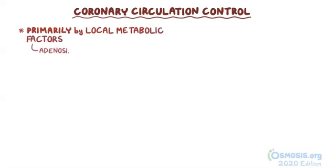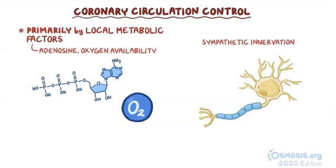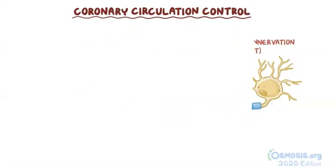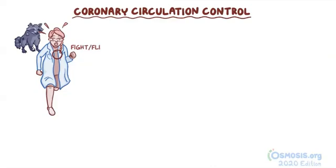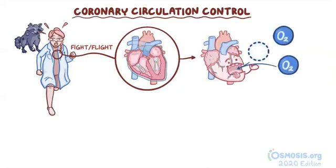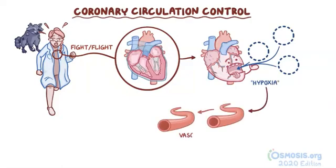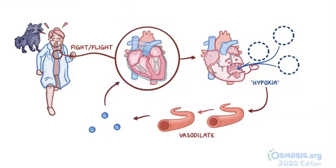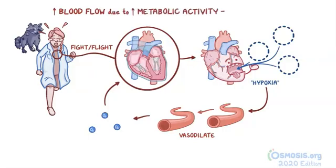Blood flow through the coronary circulation is controlled primarily by local metabolic factors like adenosine and oxygen availability, with sympathetic innervation from the fight-or-flight response playing a minor role. For example, if a scientist was running away from a zombie raccoon, the fight-or-flight response kicks in and her myocardium would contract more forcibly, consuming more oxygen and causing local hypoxia. In response, the coronary arterioles vasodilate, increasing blood flow to meet the demands of the heart. When blood flow increases due to increased metabolic activity, it's called active hyperemia.